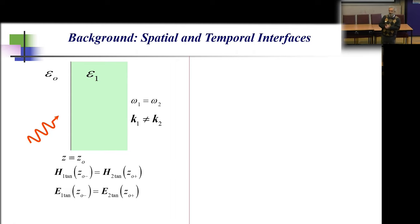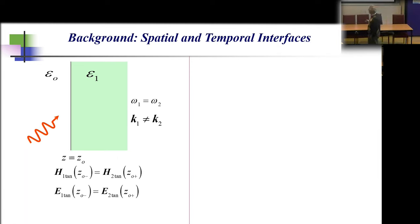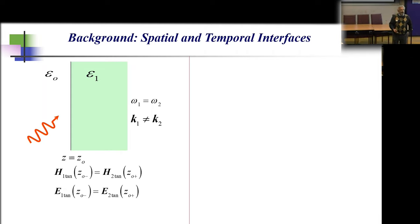The Fresnel problem involves a flat interface between two semi-infinite media, which we teach undergraduates as a first item in electromagnetics. We know the tangential component of the magnetic field should be continuous and the tangential component of the electric field should be continuous when there is no surface current density.